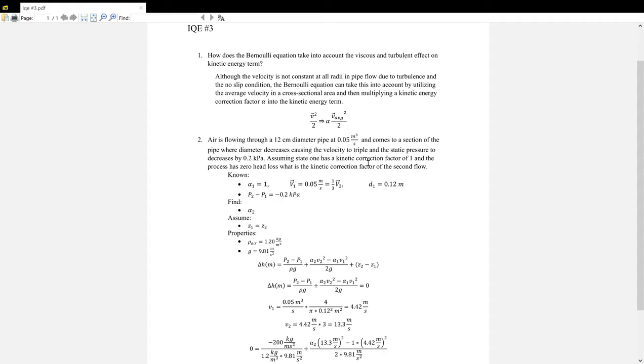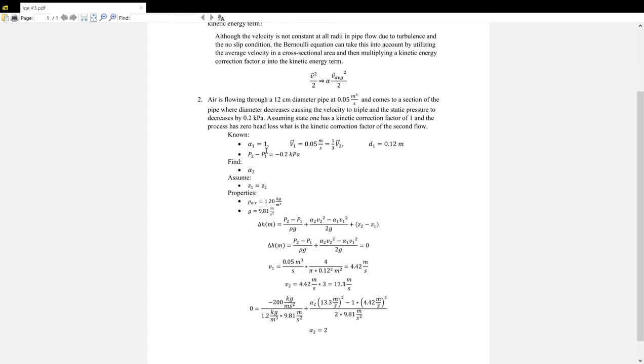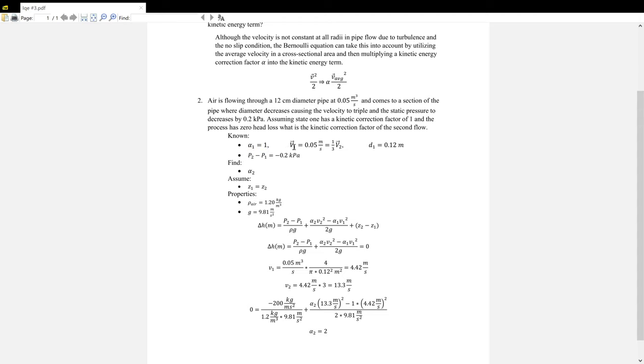Assuming state one has a kinetic correction factor of one, and the process has zero head loss, what is the kinetic correction factor of the second flow? We're given the first correction factor, V1 and its relationship to V2, diameter one, and the difference between P2 and P1, where pressure decreases. So P2 minus P1 has to be negative, and we're told to find alpha two.